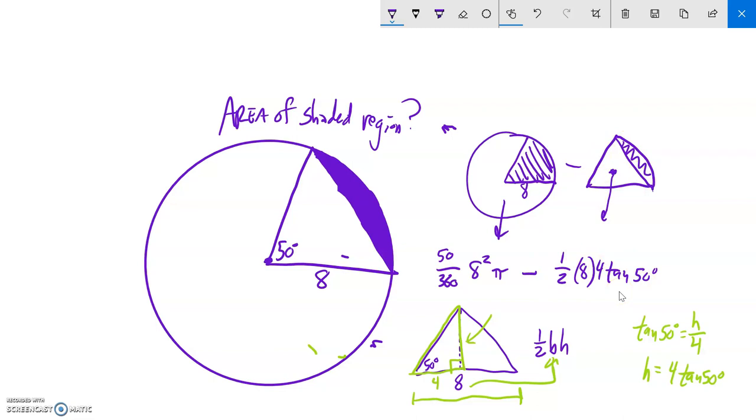And if I put that in my calculator, then I could do it a piece at a time. I'm just going to put the whole thing in my calculator at the same time. And that will give me the answer. So 50 divided by 360 times 8 squared times pi minus one half times 8 times 4 times tangent of 50 degrees. Make sure I'm in degrees for this. And I get about 8.857.